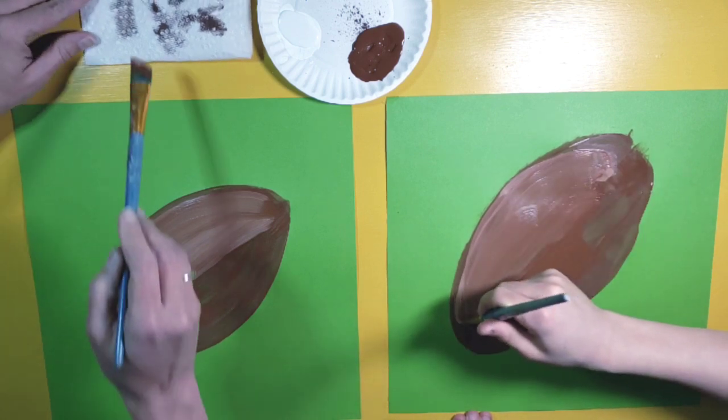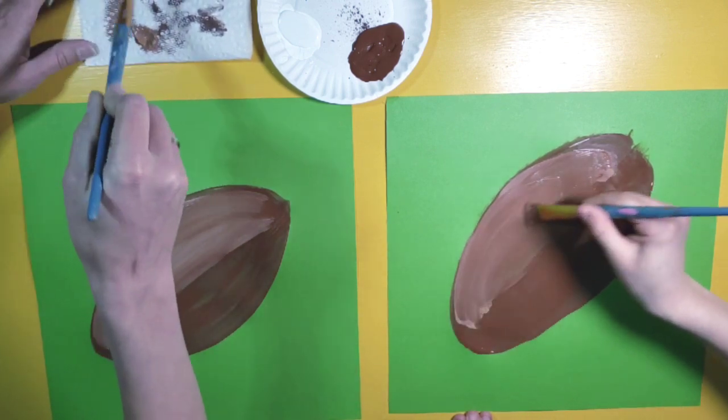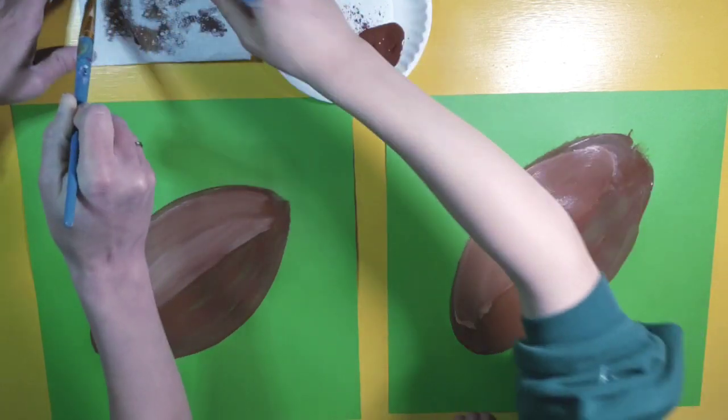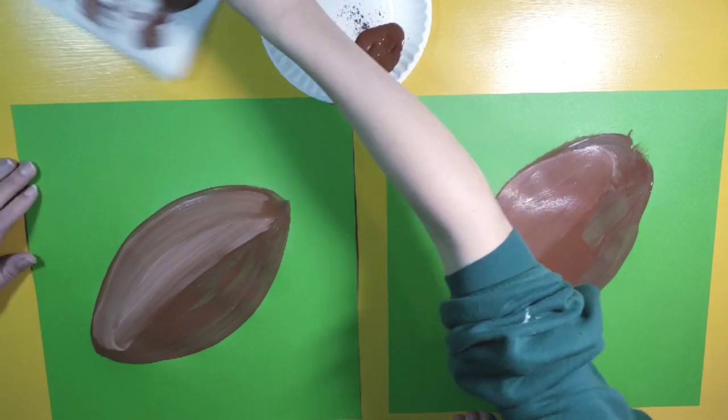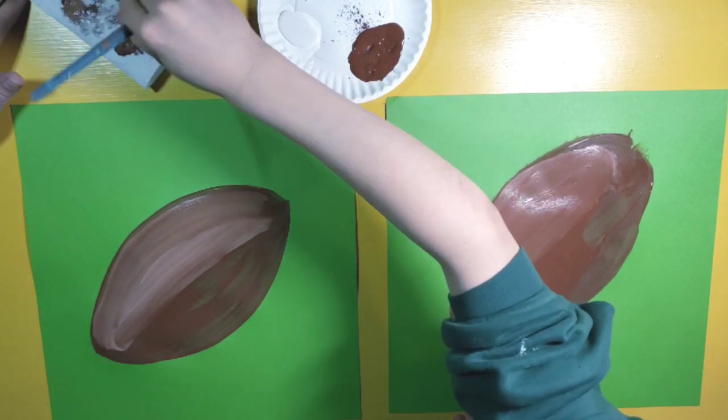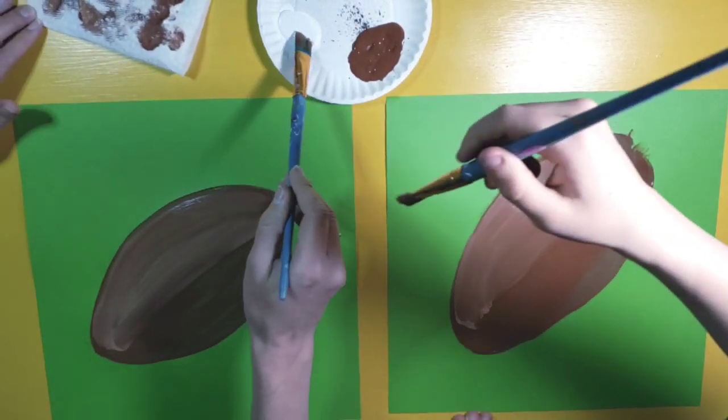Now I'm going to wipe my brush off on my paper towel to try to get most of the brown paint off. And then I'm going to dip into some white paint.